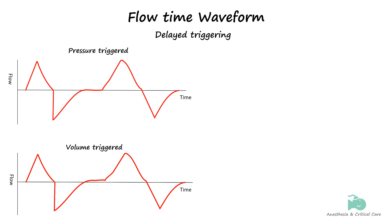Delayed triggering in mechanical ventilation occurs when there is a noticeable lag between the patient's effort to initiate a breath and the ventilator's response. This delay, typically longer than 100 milliseconds, can manifest in the flow-time waveform as a flat baseline that persists longer than expected after the patient begins to inhale. This will be followed by a delayed rise in the flow curve.